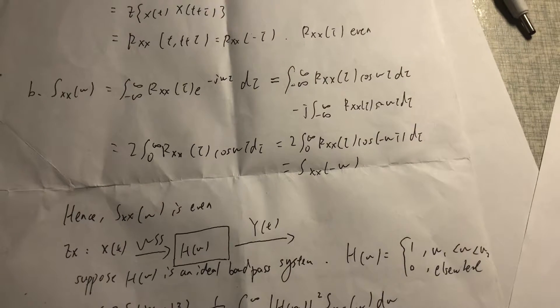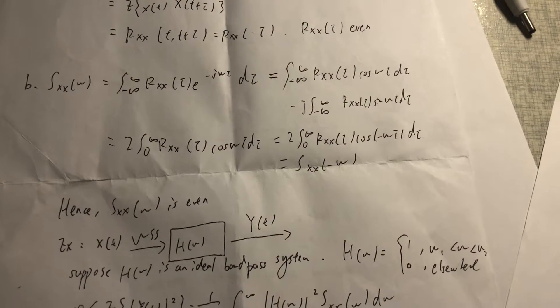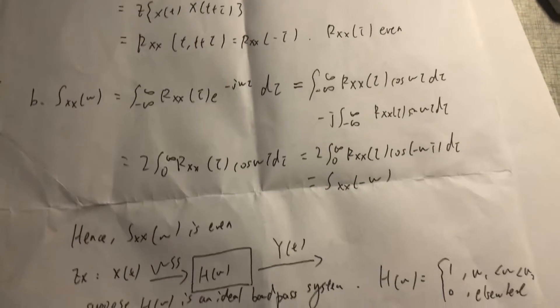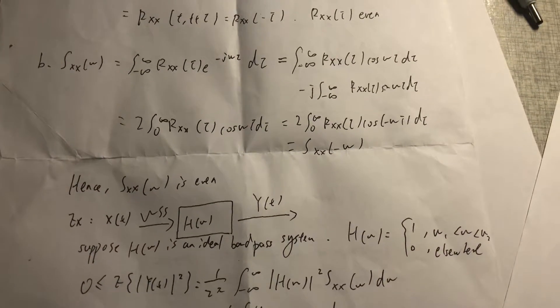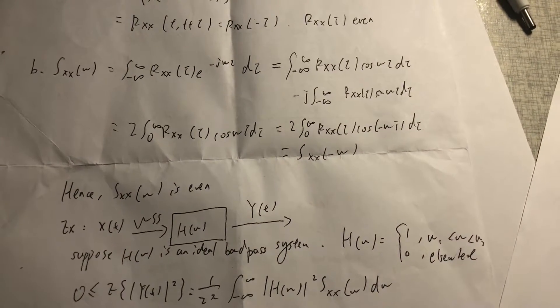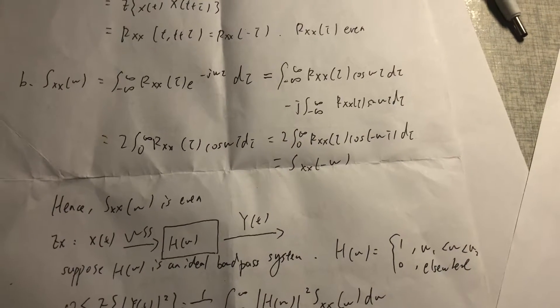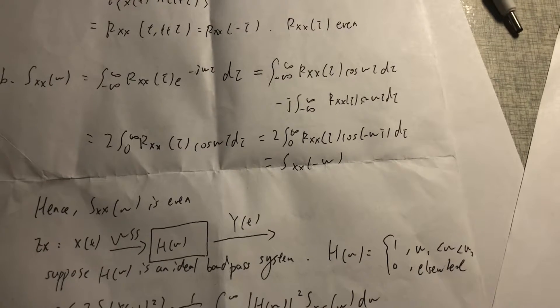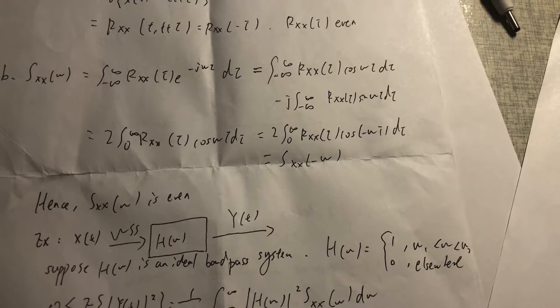Equals 2 times the integral from 0 to infinity of R_XX(τ)cos(ωτ)dτ, which equals 2 times the integral from 0 to infinity of R_XX(τ)cos(-ωτ)dτ.